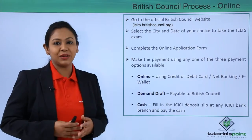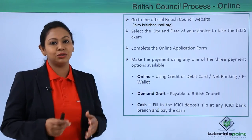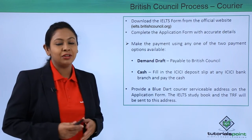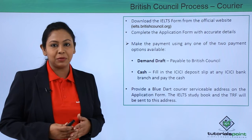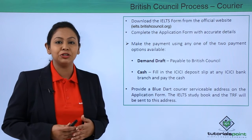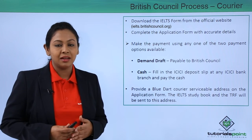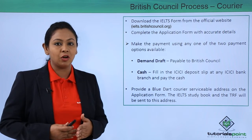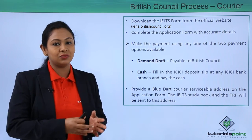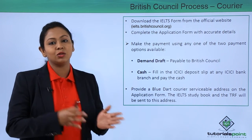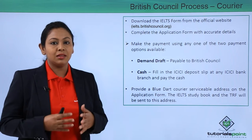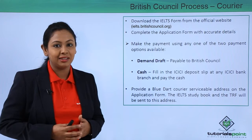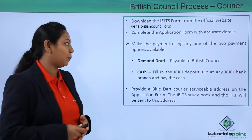The next method is through courier — the British Council courier method. For this, you will have to download the application form from the British Council official website. I would suggest making two copies of the form: first fill in the form roughly, then transfer all the details onto the fair copy. This will help reduce errors since you're doing it manually.